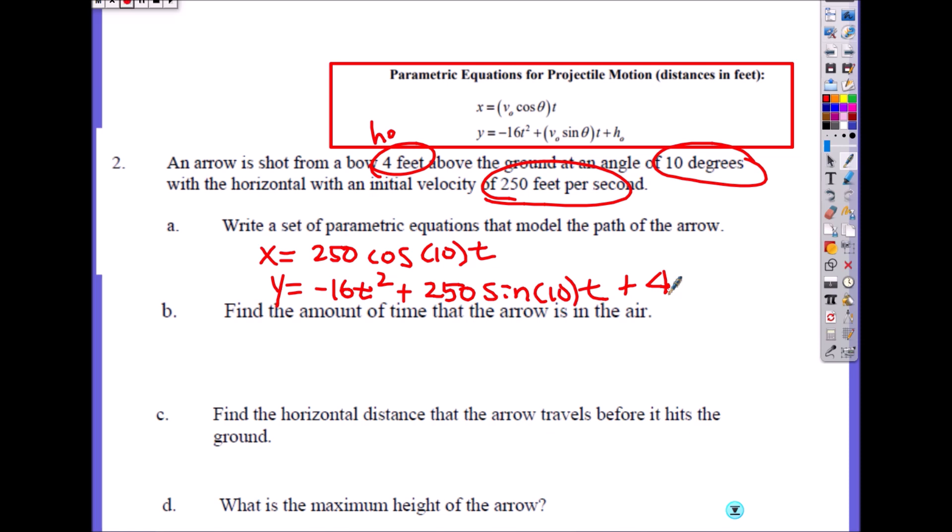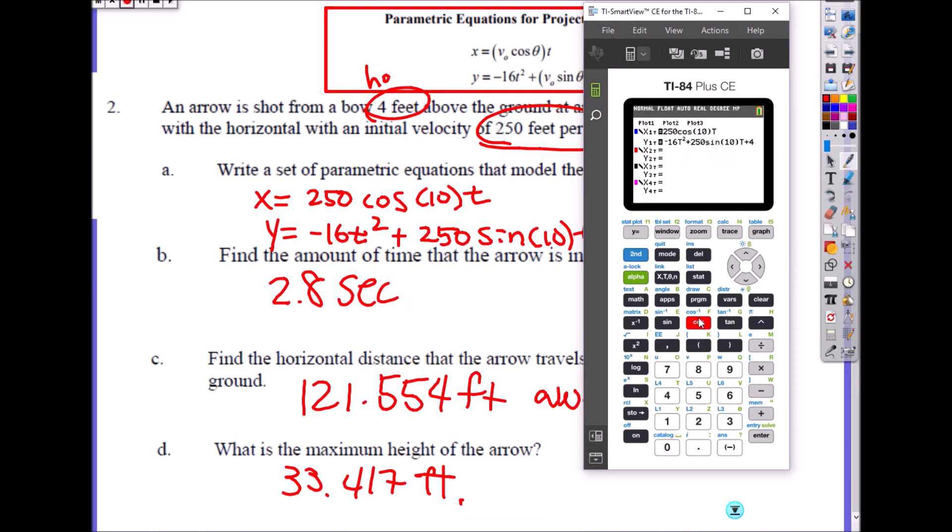Let's plug into the calculator and graph it. The first question is asking how long was the arrow in the air, so we have to know when it hits the ground, the time when it hits the ground, the x value (the horizontal distance it travels), and what's the maximum height (the maximum y). Make sure your window is 0.1, then start with zoom zero.